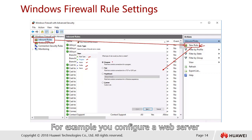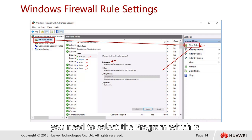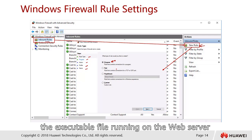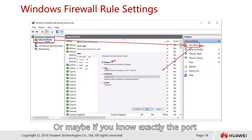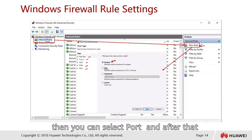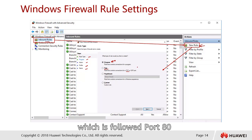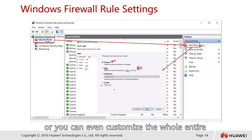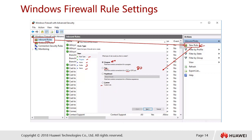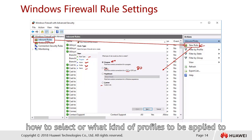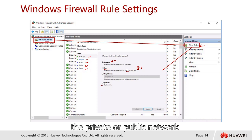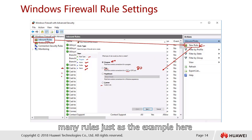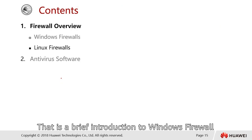For example, when configuring a web server, you can specify the executable file or select 'Ports', enter TCP and port 80. You can also configure predefined rules or fully customize firewall rules. After selecting the action (permit or deny), choose the profile (private or public) and define a name for the rule. You can configure many rules. That concludes the brief introduction to Windows Firewall.